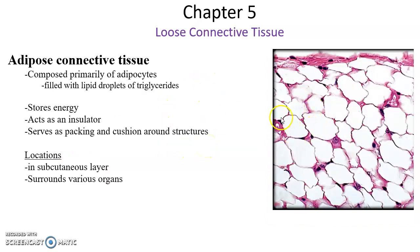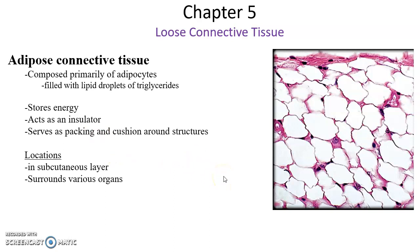Adipose tissue is made up of adipocytes, which look like big empty circles — but the empty parts of those circles is where the triglycerides, the lipids, are being stored. You can occasionally see a nucleus here and there. Not much ground substance, not much protein fibers, lots and lots of adipocytes. They are storing energy, they act as insulators to prevent heat loss, and they can act as packaging and cushioning by surrounding and protecting structures from forces. Found in the subcutaneous layer and surrounding various organs, such as the kidneys.